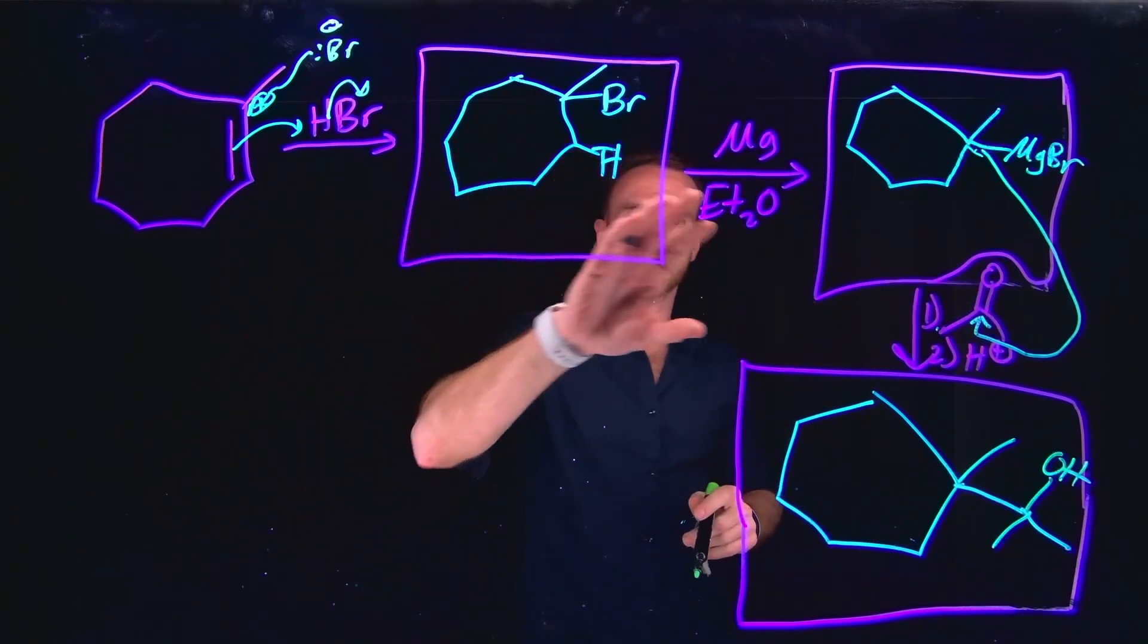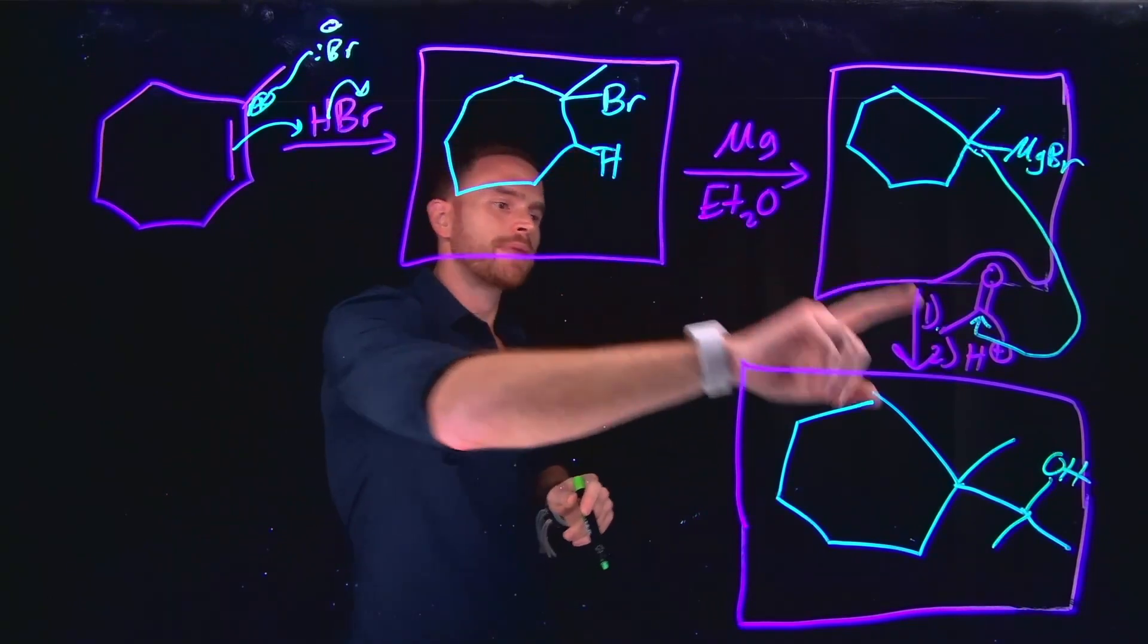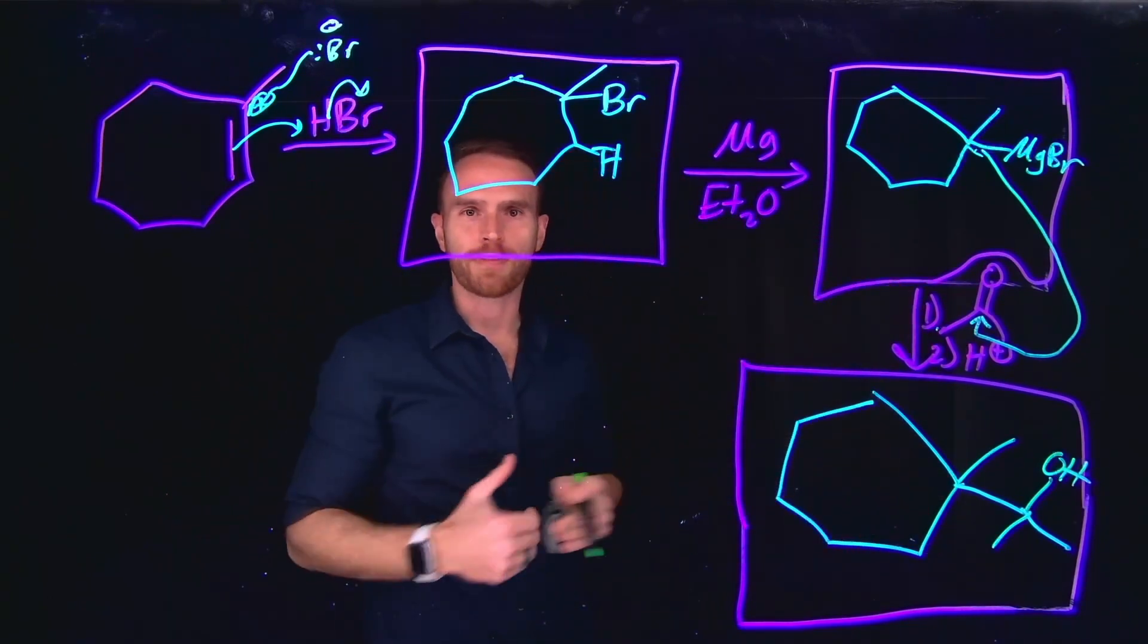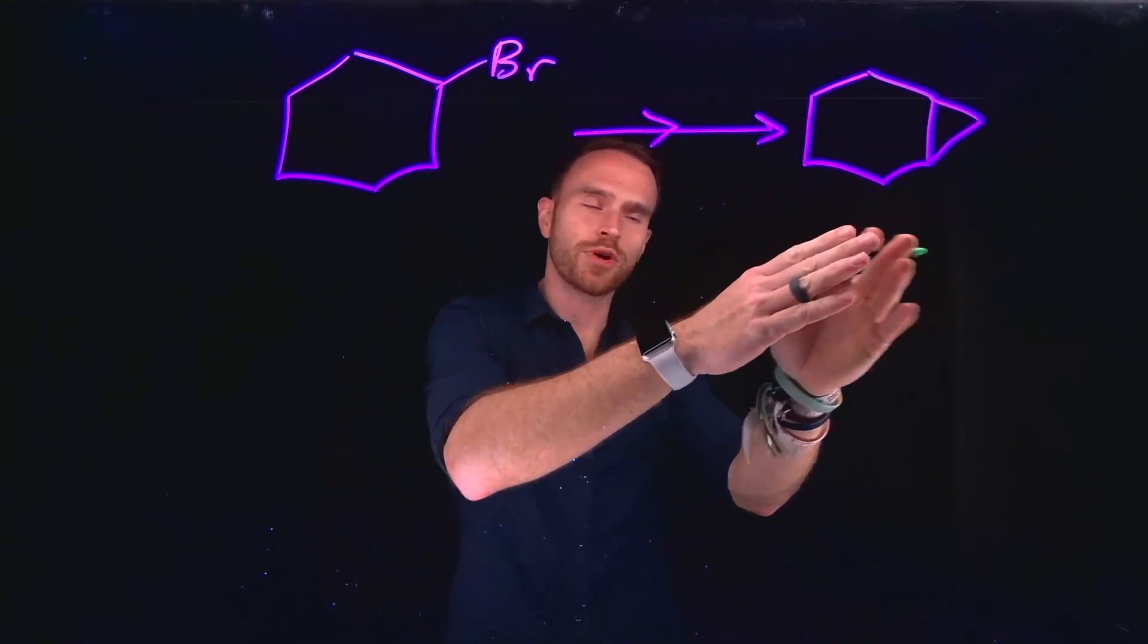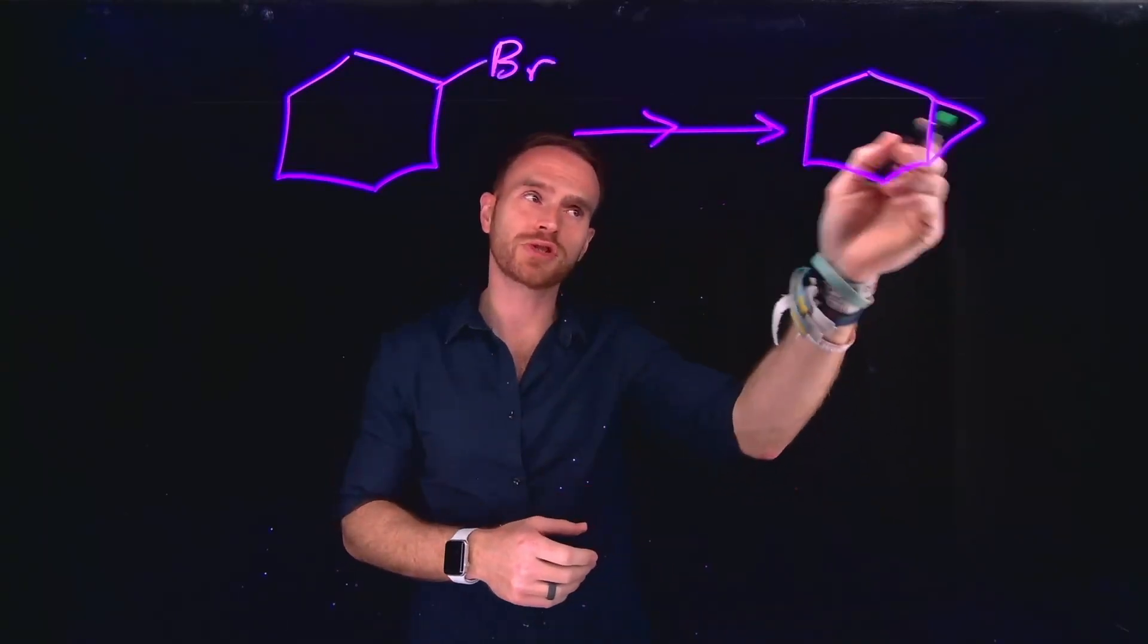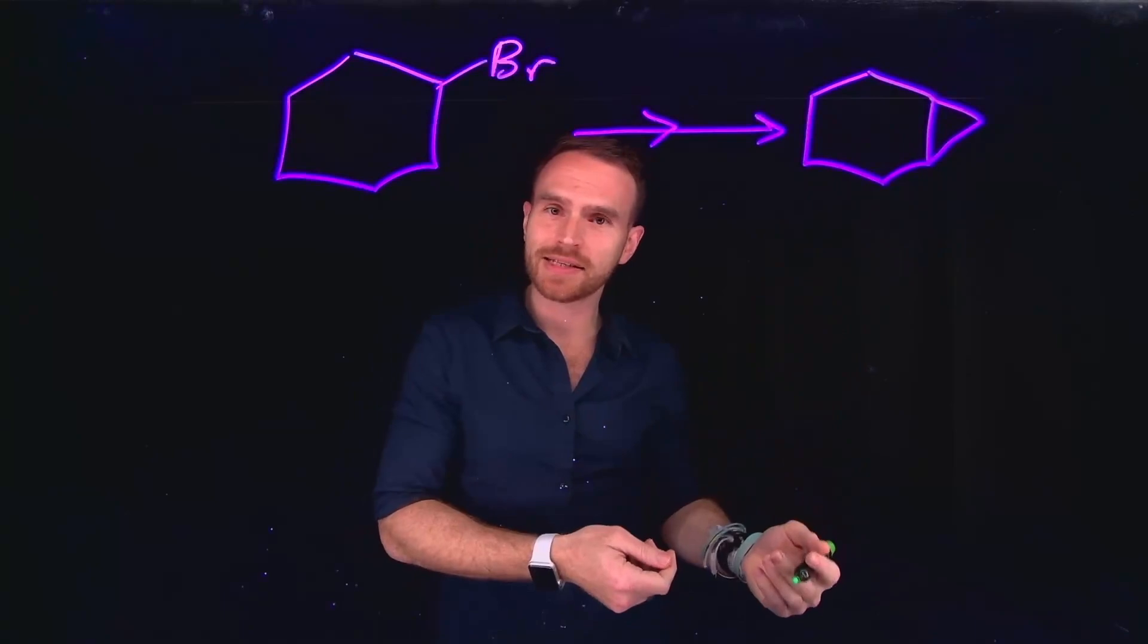So for that reason, this is the final product of all of these different steps, addition using hydrobromic acid, formation of a Grignard reagent, and then nucleophilic attack at that carbonyl carbon. For the final question, you were asked to form a new fused ring system where you have a cyclohexane ring fused to a cyclopropyl ring.